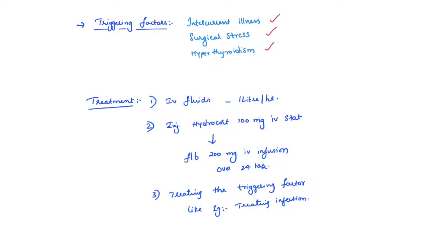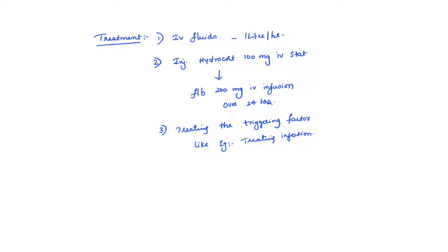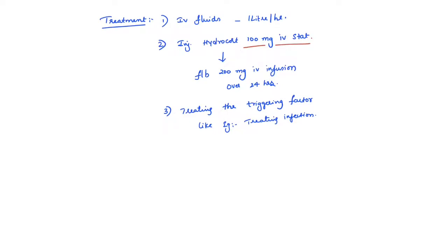In secondary adrenal insufficiency, sudden stoppage of steroids in a chronic steroid patient can also trigger adrenal crisis. The treatment is aggressive fluid management with IV fluids at 1 liter per hour, and injection hydrocortisone — which has both glucocorticoid and small mineralocorticoid action — given at 100 mg IV stat followed by 200 mg in IV infusion over the next 24 hours. We also need to treat the triggering factors — for example, antibiotics if the patient has infection and treatment of underlying thyroid disorders.